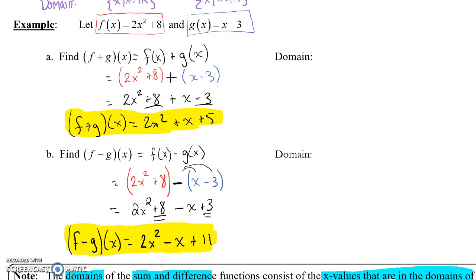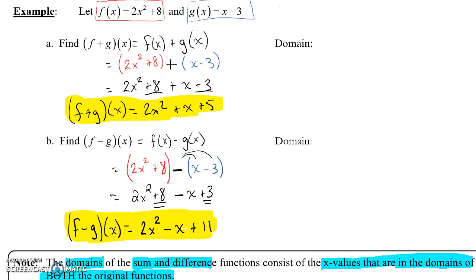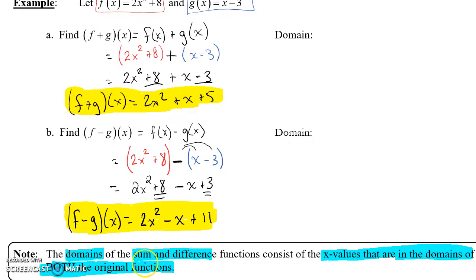Both functions, f and g, have a domain that represents all real numbers. Therefore, the domain of their sum and the domain of their difference will also have domains that are in both the original functions. Since both original functions are all real numbers, the domain for these will also be represented by all real numbers.